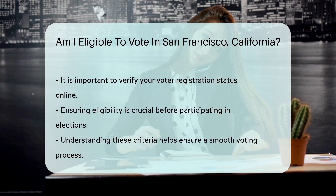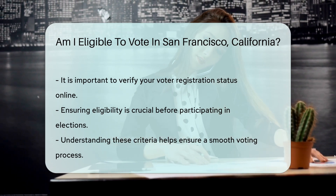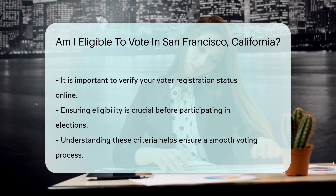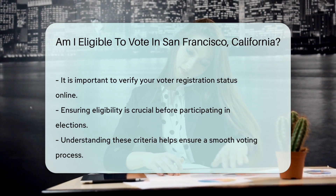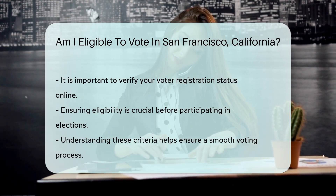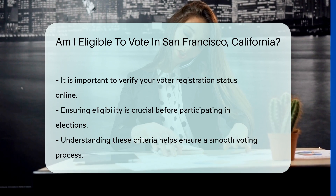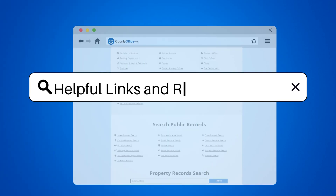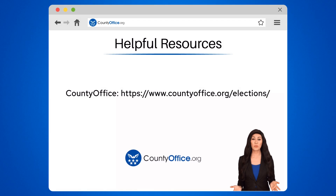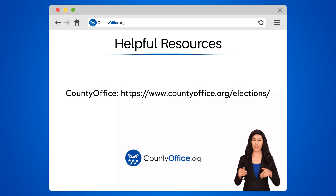To verify your eligibility, you can check your voter registration status online. This ensures you meet all necessary criteria before participating in elections. To learn more, check out these links, which you can click in the description below. Feel free to comment your questions — we're here to help. Thanks for tuning in to our video. Please like and subscribe and leave a comment below.